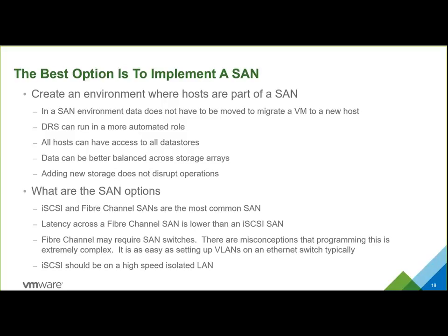The SMB that is stuck in the direct-attach model has SAS arrays sitting behind their hosts and has run into pain points — they can't easily migrate a virtual machine from one host to the other. The best option for them is to create a SAN. Once they're in a SAN environment, data doesn't necessarily have to be moved in order to migrate a VM between one host and another.